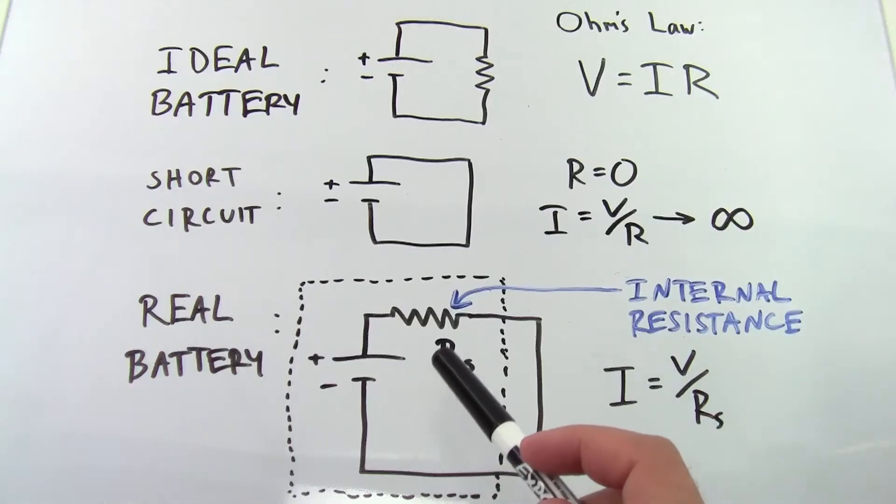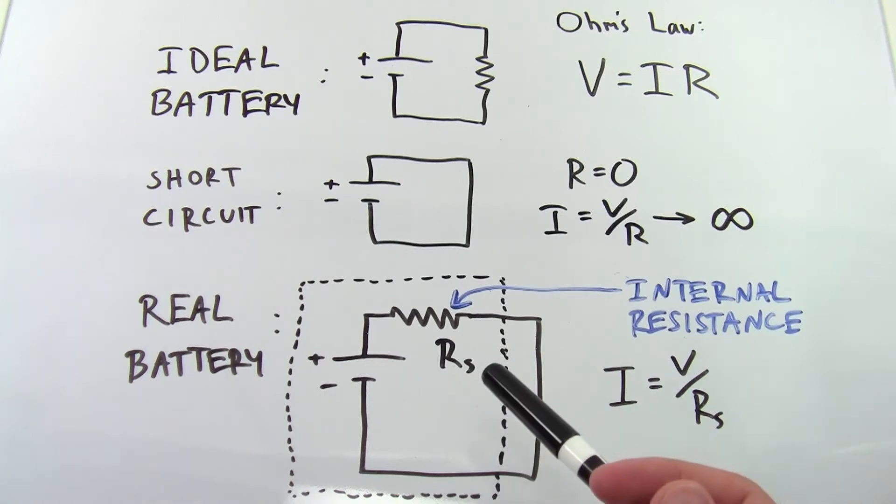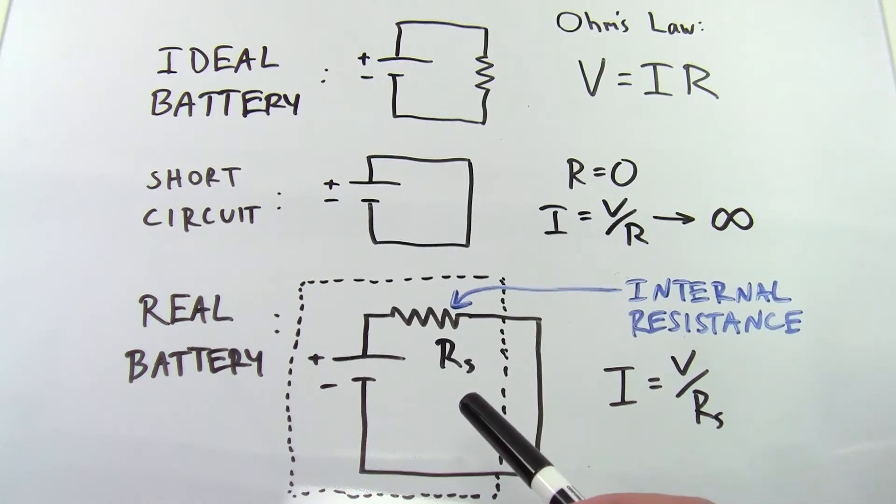A real battery has some internal resistance to current flow. This comes from the physical materials that make up the battery, like the metal terminals, as well as the resistance in the chemical reaction that's occurring inside the battery.